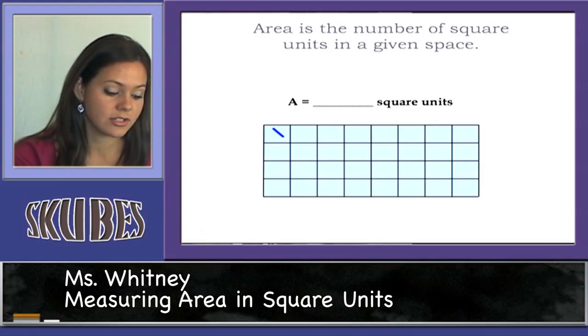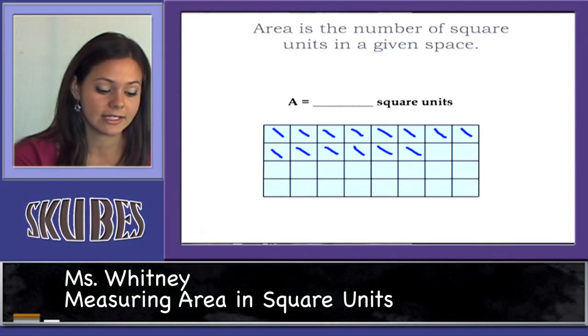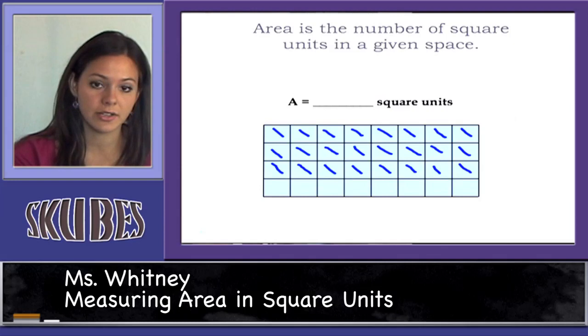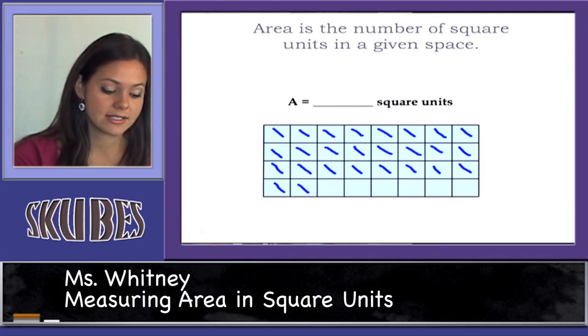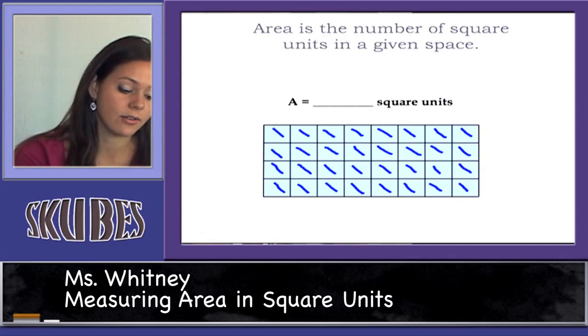We have 1, 2, 3, 4, 5, 6, 7, 8, 9, 10, 11, 12, 13, 14, 15, 16, 17, 18, 19, 20, 21, 22, 23, 24, 25, 26, 27, 28, 29, 30, 31, 32. The area of this rectangle is 32 square units.